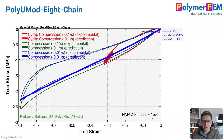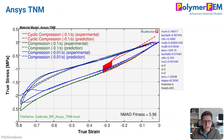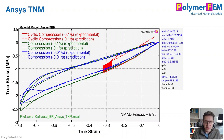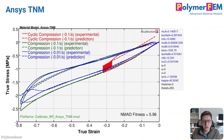Here's another model: the ANSYS TNM model. It's available in ANSYS and is meant for plastic materials. If you apply it to rubbers, we don't get good results — it's not meant for this type of material. Here's an example of what can happen if you try it.